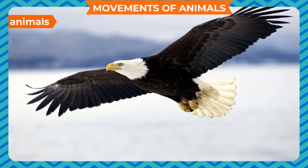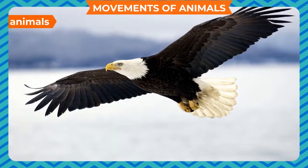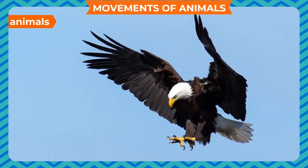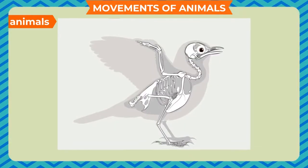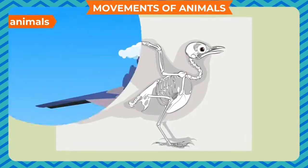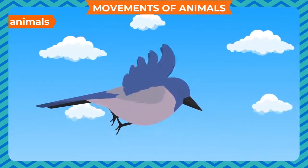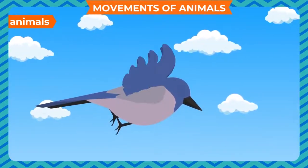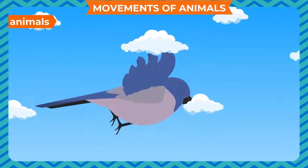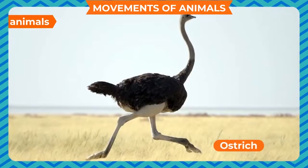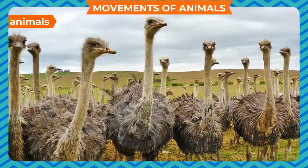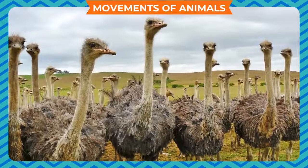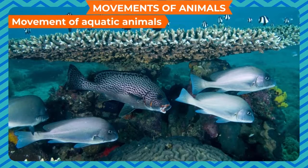Movement of birds: most birds fly in the air with the help of their wings. They push themselves forward by moving their wings up and down. Their bones are small and light, which helps them to fly. They use their hind limbs to run, hop, perch, or scratch the ground to look for prey. Some birds such as the ostrich and kiwi cannot fly because they have heavy bodies and weak wings.